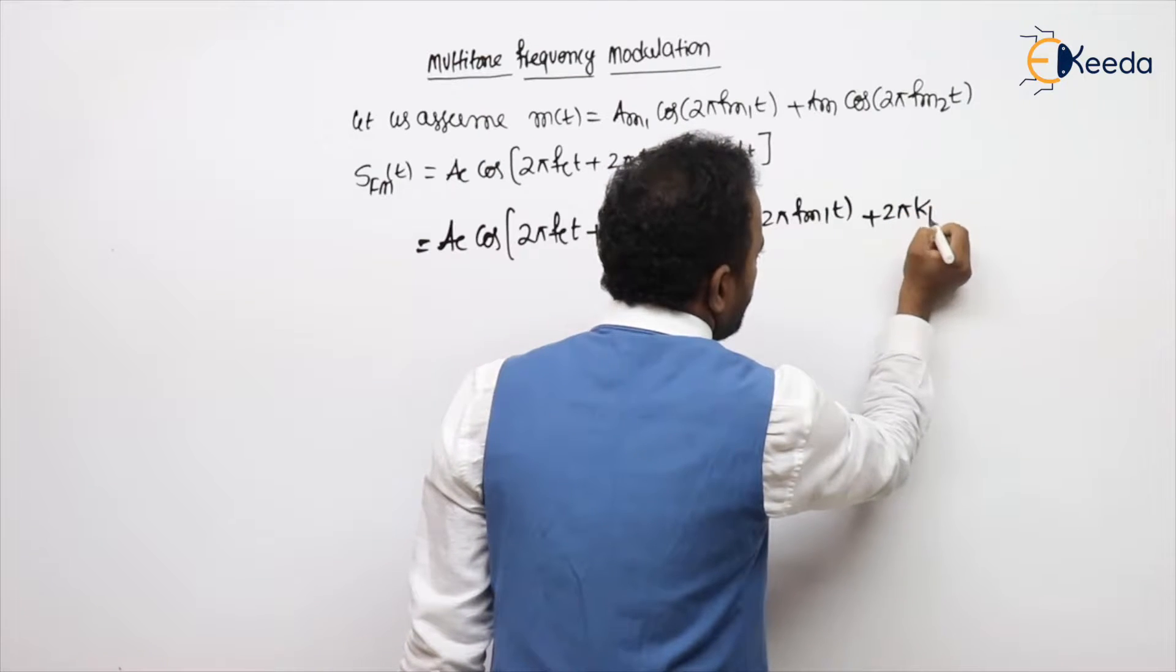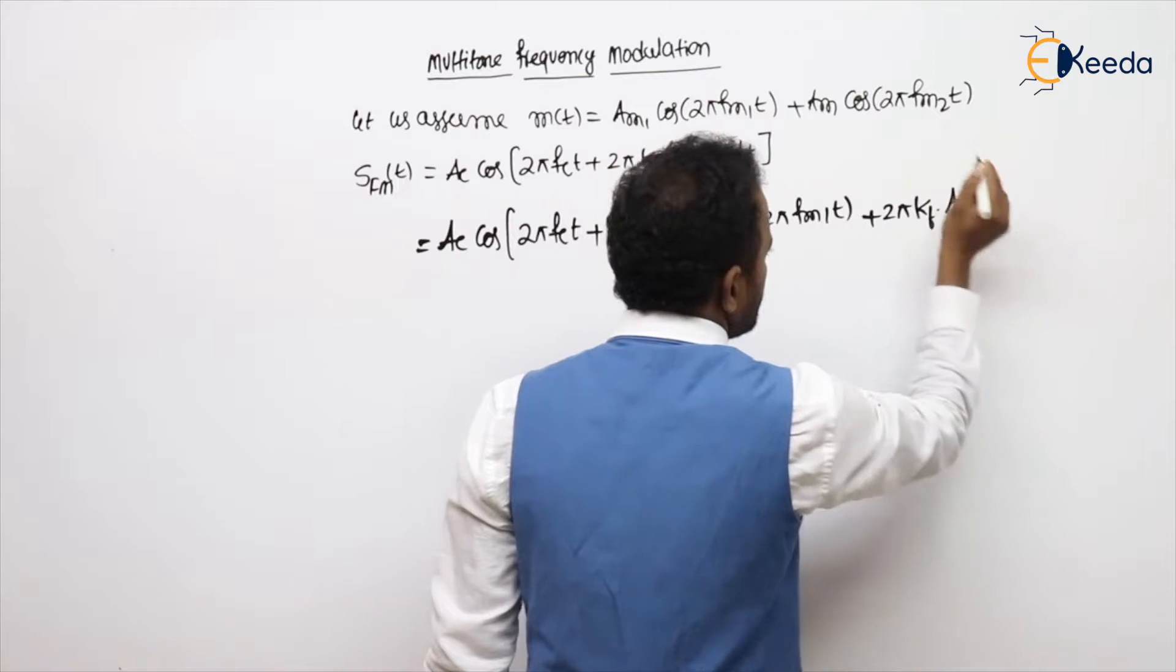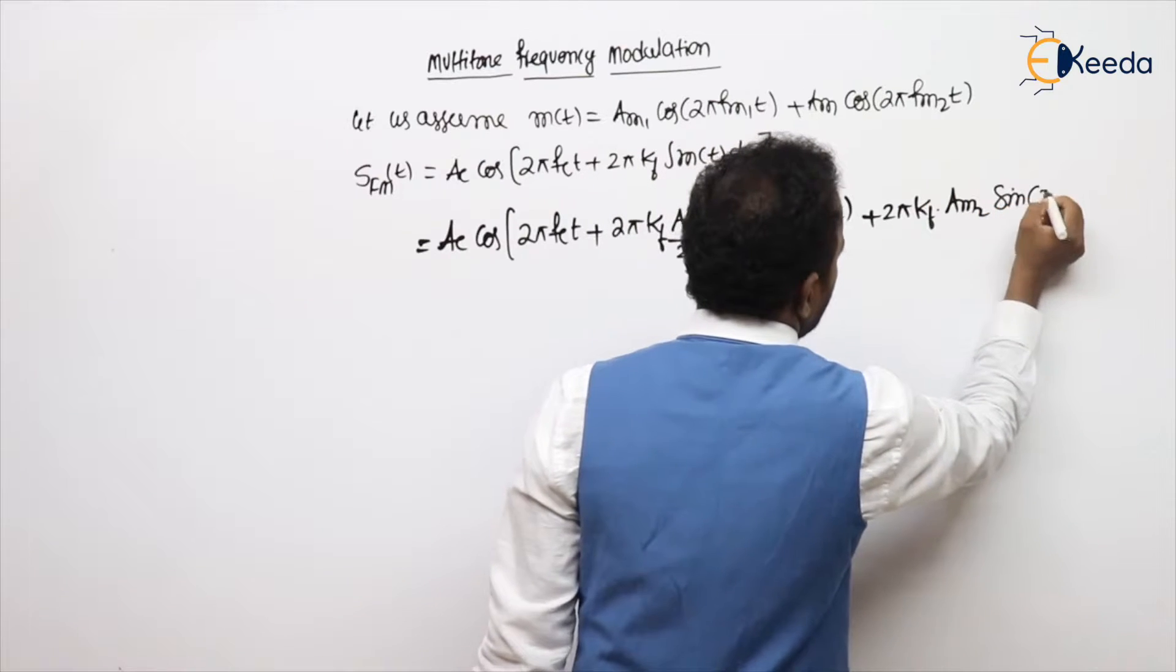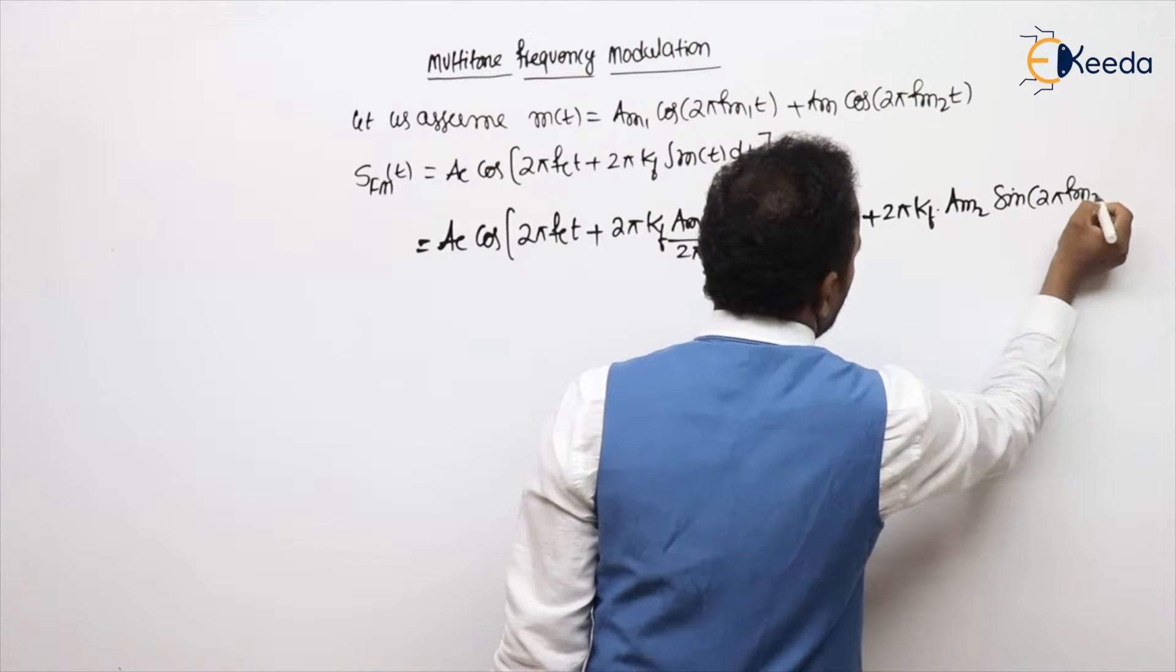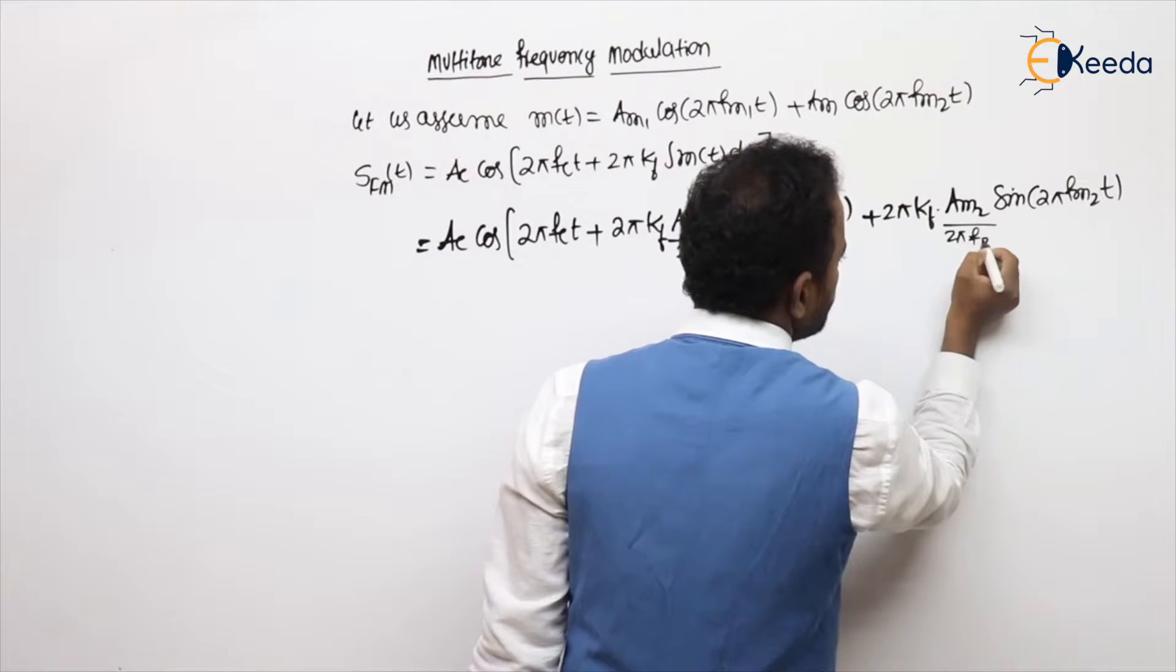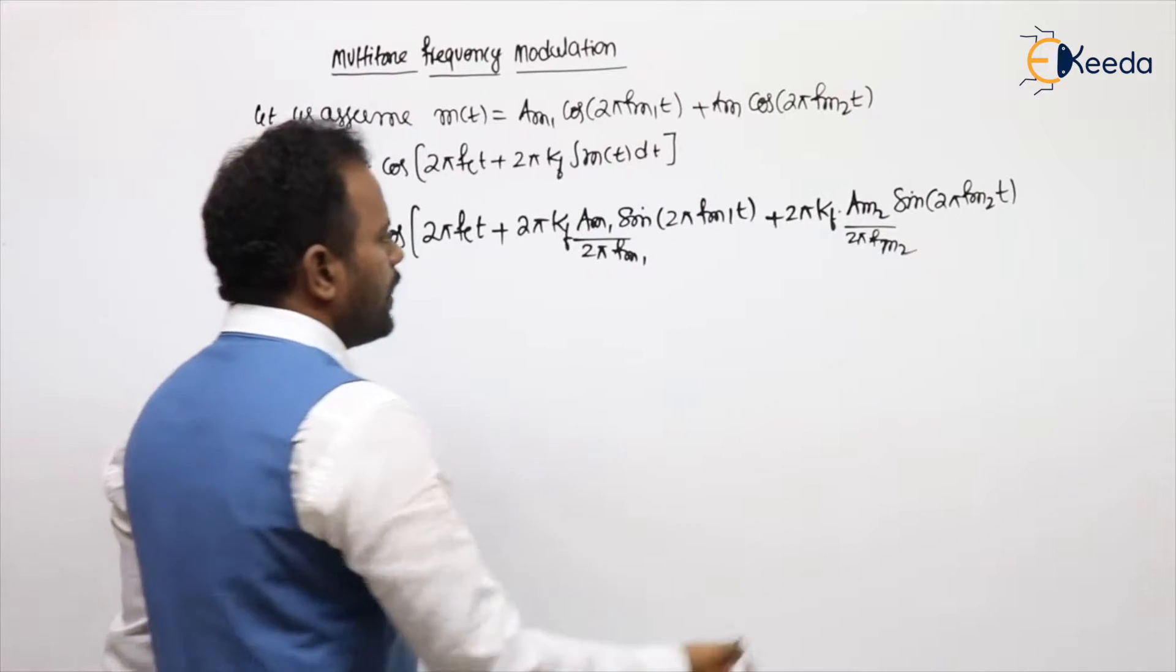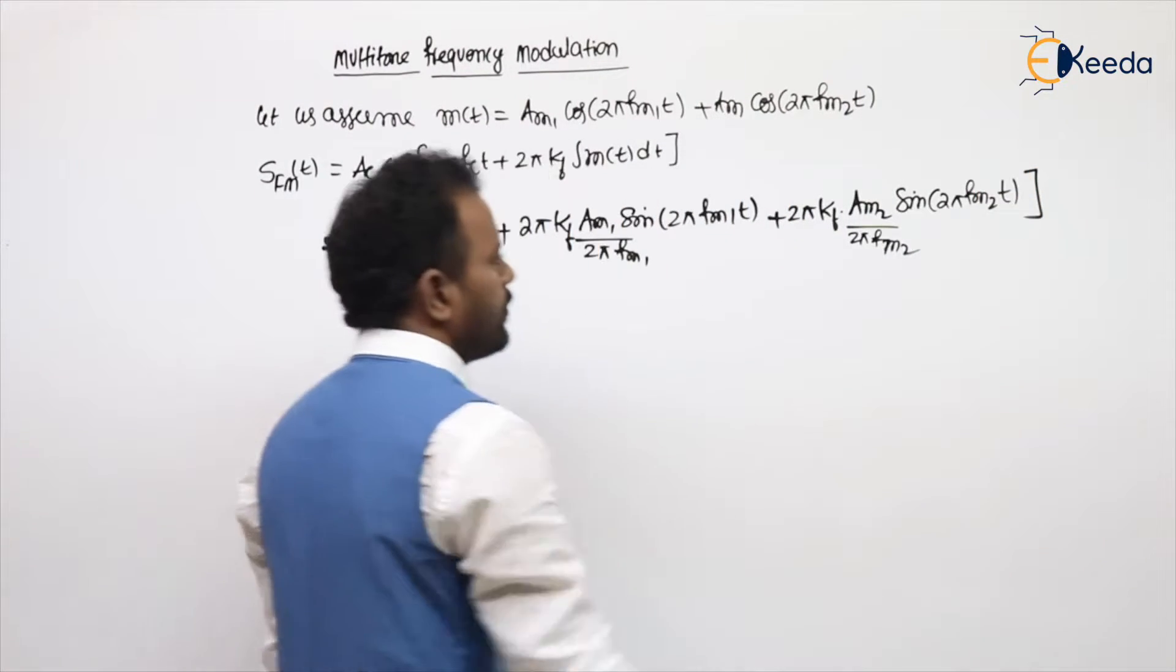2π kf Am2, integration of cos will be sine 2π fm2 t divided by 2π fm2. All the things will be inside the bracket of the cos only.